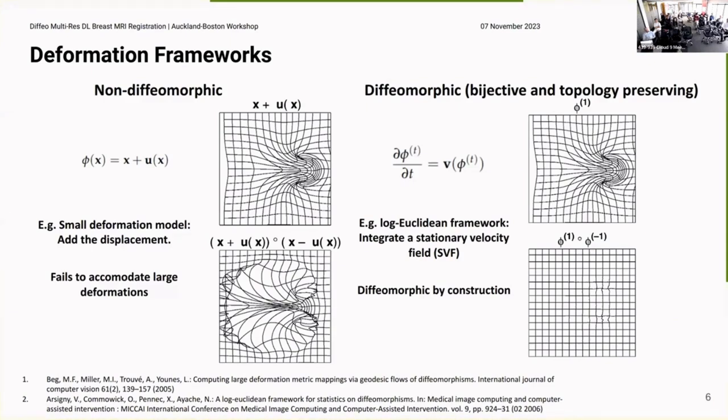So a small deformation model would be just adding the displacement to the coordinates and this would be considered a fancy term for non-diffeomorphic. These types of parametrization of the deformation don't always give you an inverse. For example, if you were to add the displacement and then subtract the displacement of this deformation field, you'll find when you take the composition of that displacement and its inverse, you don't get the identity. Whereas there's been work to establish these diffeomorphic frameworks and they are guaranteed to be bijective and topology-preserving. That also means when we take the deformation and its inverse to get approximately the identity, you will get some small error from integration.